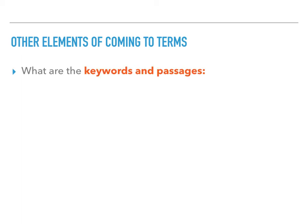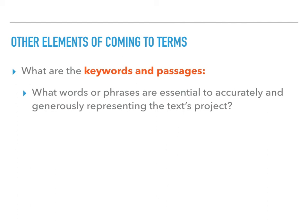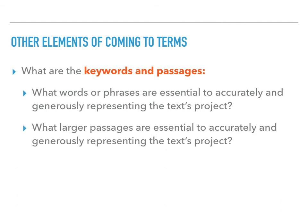As you're answering all of these questions about aims, methods, and materials, you also need to be thinking about the key words and passages that best illustrate your answers to those questions. For example, there's no way to describe coming to terms without using words like aims, methods, and materials, or even words like generous and fair. So the question is: what words and phrases are essential to accurately and generously representing the text's project? Sometimes you're also going to want to think about bigger chunks of text — a full sentence or a paragraph that needs to be quoted in order to represent a project carefully. How much you need to quote really depends on your own use of the text in your writing, and the more important a text is to your project, the more careful you have to be in distinguishing your voice from that of the source.